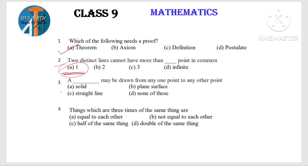Next question: A blank may be drawn from any one point to any other point. The answer is a straight line — it is a straight line. These two questions are one note. Practice these values — we have to practice.